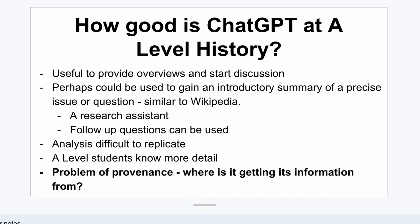So in summary, how good is ChatGPT at A-level history? I think it's useful for providing overviews and perhaps starting a discussion — looking at what it's leaving out and why it isn't a top-level answer. It could be a useful way to gain an introductory summary on an issue, almost similar to Wikipedia but more specific. It's been described as a research assistant where you can ask follow-up questions and delve more deeply into precise details.